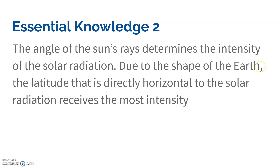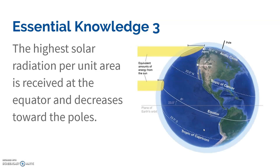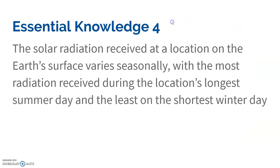The angle of the sun's rays determines the intensity of solar radiation. The latitude that is directly horizontal receives much higher intensity. The solar radiation per unit area is highest at the equator and lowest at the poles. Most radiation is received during a location's longest summer day, and the least on the shortest winter day.